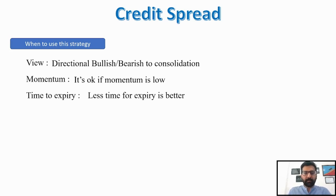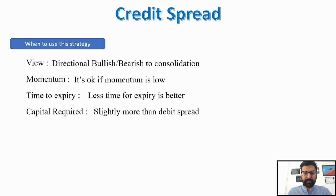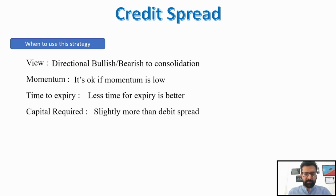Generally, this strategy is good when less time is left for expiry, because it is dependent on time decay — and you know that time decay is intensified as you move closer to expiry. So the closer we are to expiry, the better and faster results the credit spread will give. The capital and margins required are similar to debit spreads, slightly higher, but as it's a spread — buying one strike and selling another — we get the margin benefit.